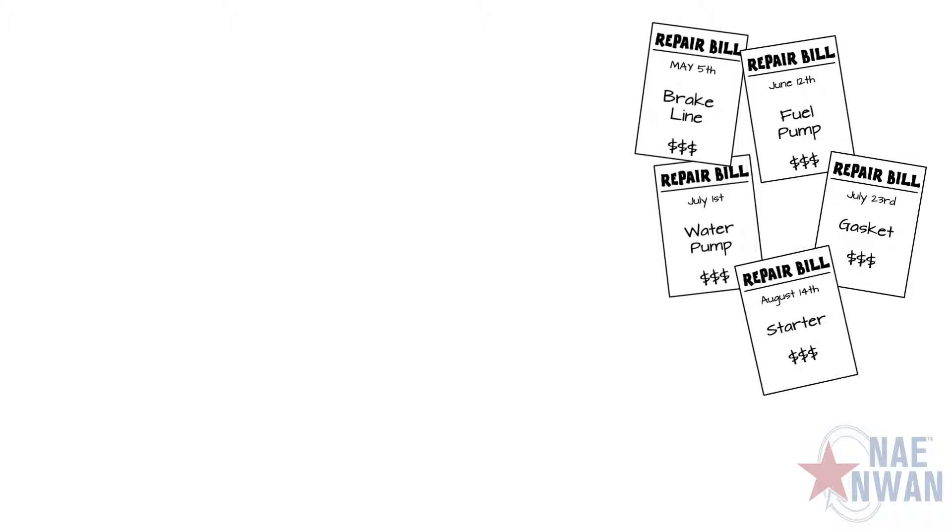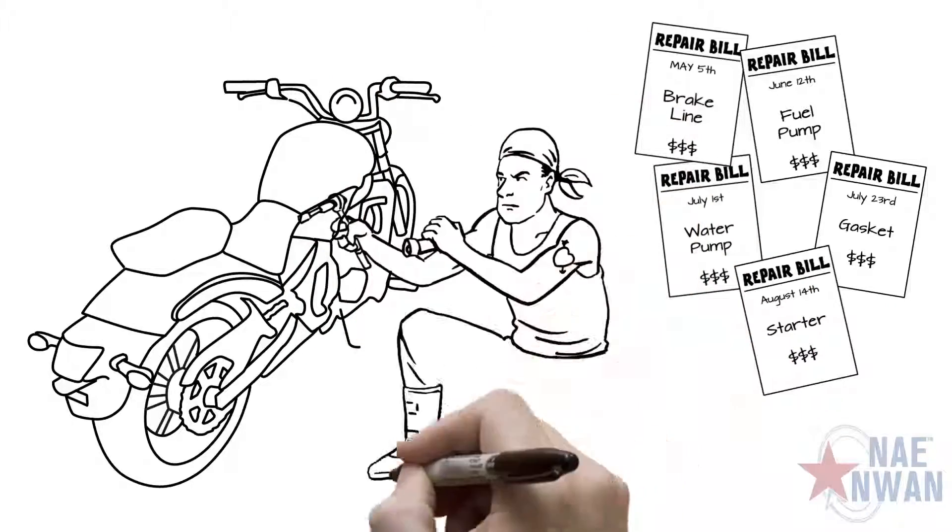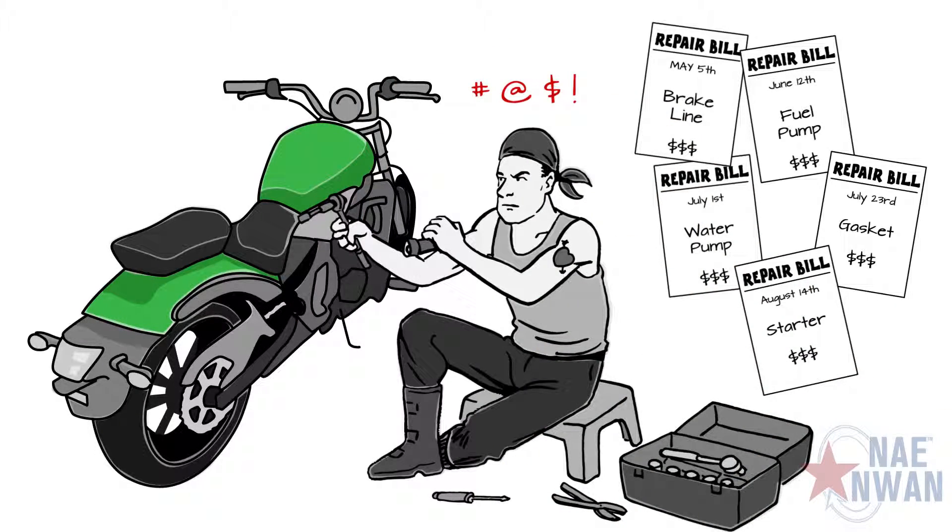First it's a brake line, then a failed fuel pump, a water pump, a gasket, then the starter. Suddenly you find yourself constantly making repairs on your motorcycle rather than riding.